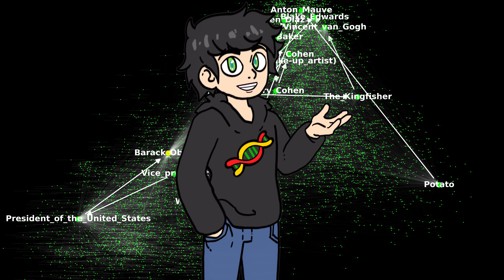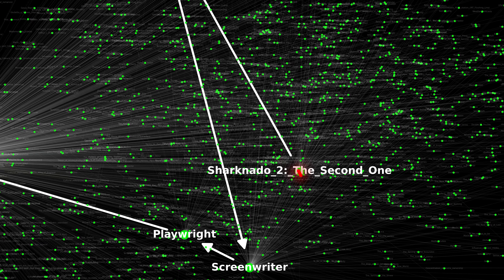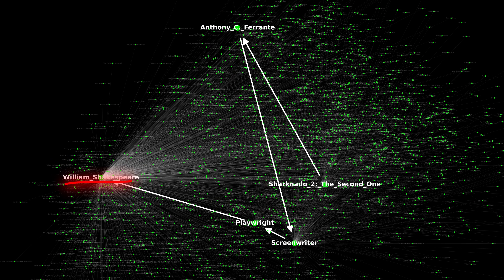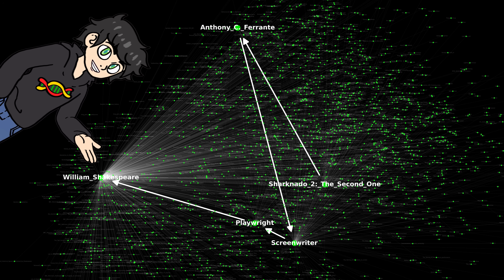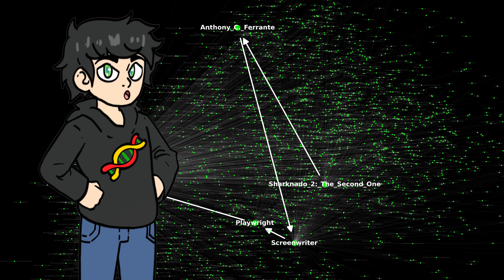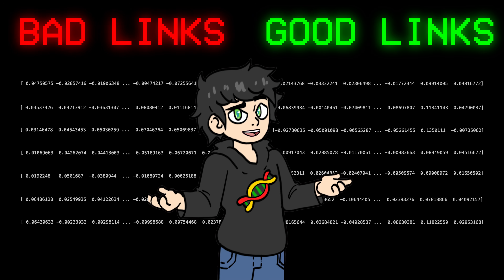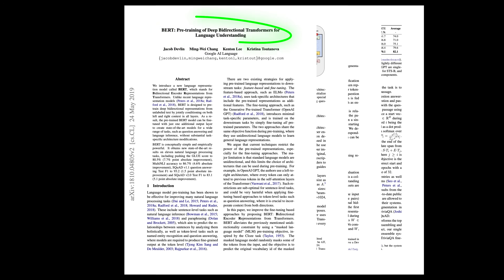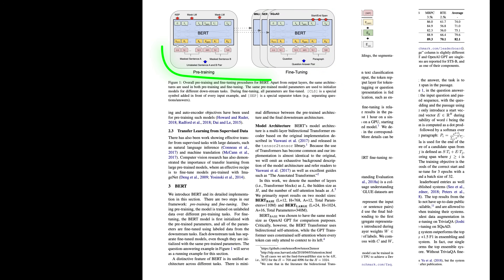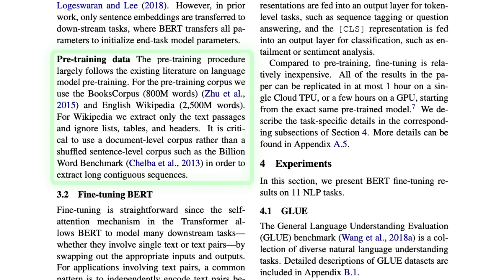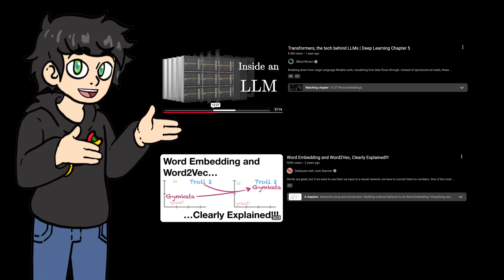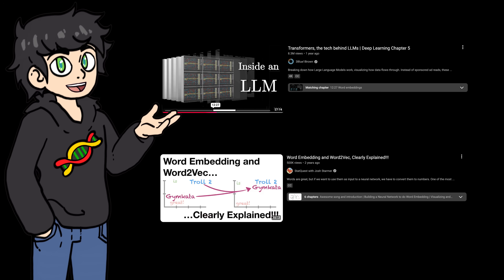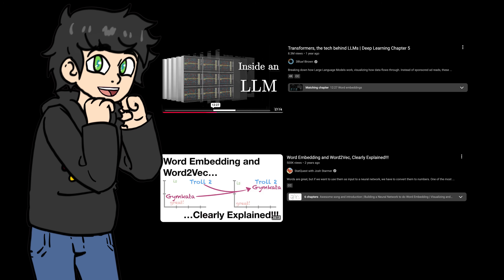Normally this works a bit better — for example, the path from Sharknado 2 to Shakespeare didn't get as confused. Now, you might be asking how we actually get these word embeddings. The answer is it's complicated, but basically people download the entire internet and use really big neural nets — normally with a transformer architecture — and train on the entire internet. I'll link to some 3Blue1Brown and StatQuest videos below if you want to know more.